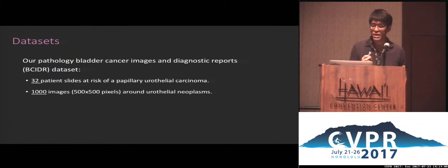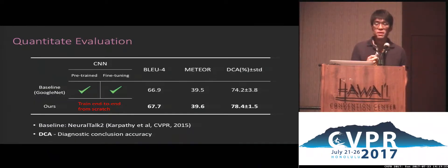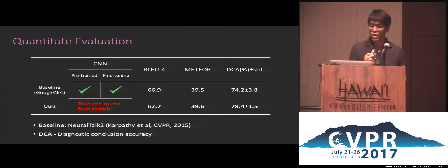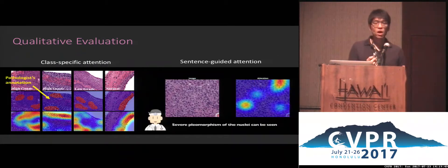To evaluate our method, we collected a pathology image dataset from 32 patient whole slides. For each image, there are five reports written by doctors, resulting in a total of 5,000 paired data points. We use NeuralTalk2, a famous method for natural image captioning, as a baseline for comparison. Apart from standard text quality evaluation, we make a more definitive evaluation of pathological meaning for key words, and we evaluate diagnosis conclusion accuracy, which we call DCA, extracted from the generated report text. Our method showed better performance on the standard metrics.